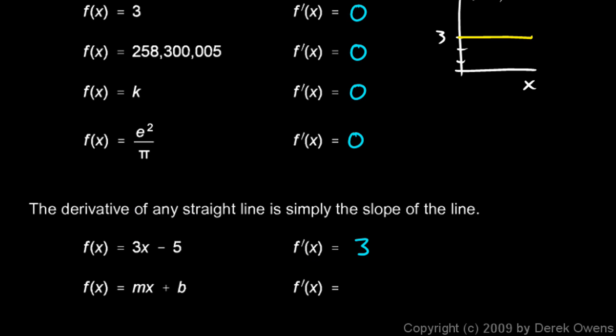If we have a line like this, y equals mx plus b, that might be hard to read there, that's a plus sign, y equals mx plus b, then the derivative is m, the slope of the line.